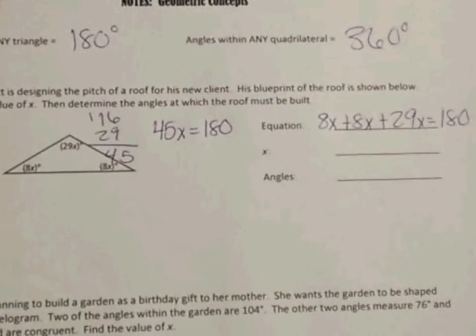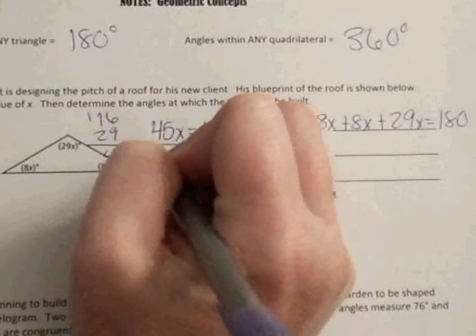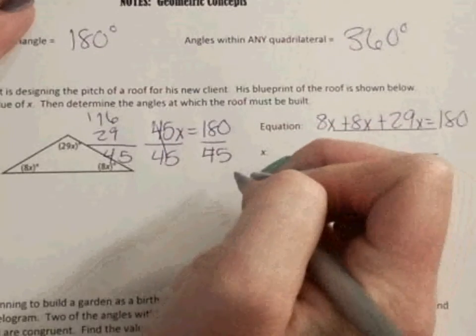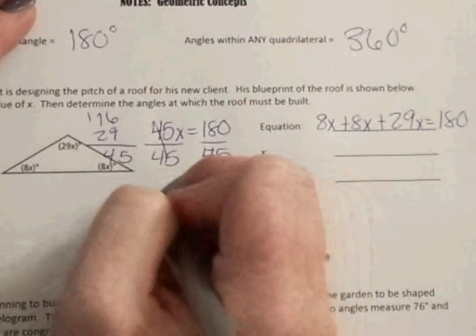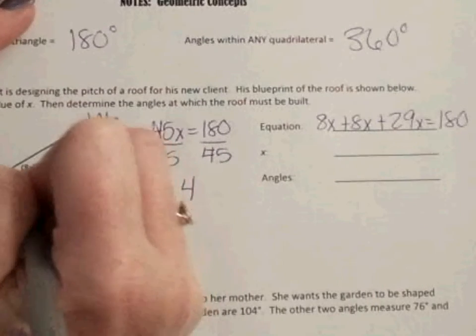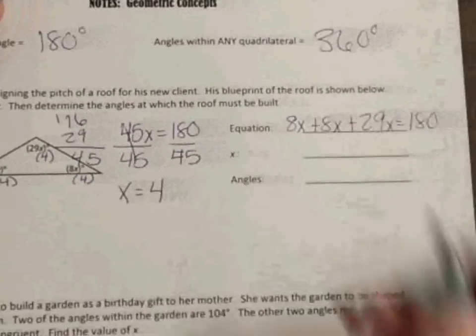So I have a total of 45 x's and they equal 180. So just like going back to your equations to get the x by itself, we divide. And 180 divided by 45 is 4. So each one of these x's in here is a 4. So x equals 4.